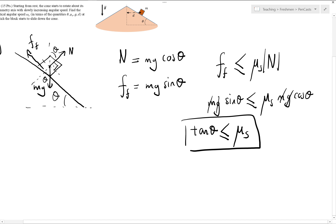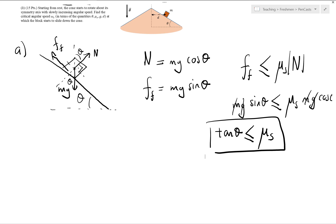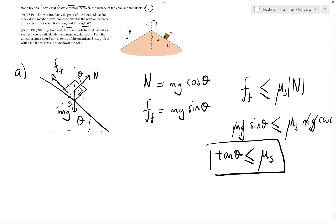This gives us mg sine theta less than mu_s times mg cosine theta, which simplifies to tangent theta less than or equal to mu_s. Both sides are dimensionless, which makes sense. For a flat surface (small theta) it is easy for the object not to slide, but approaching 90 degrees you need a very high coefficient of friction. That completes Part A.